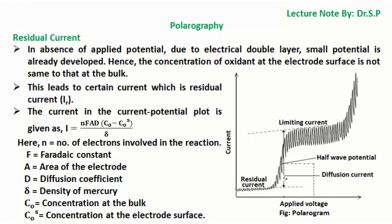The current in the current-potential plot is given as: current I = NFAD × (bulk concentration minus concentration at the electrode surface) divided by the density of mercury. Here, N is the number of electrons involved in the reaction, F is the Faradaic constant, A is the area of the electrode, D is the diffusion coefficient in cm²/s, delta is the density of mercury in g/cm³, C₀ is the bulk concentration in millimole per liter, and C₀S is the concentration at the electrode surface in millimole per liter. Using this formula, we can calculate the current produced during the electrochemical process.